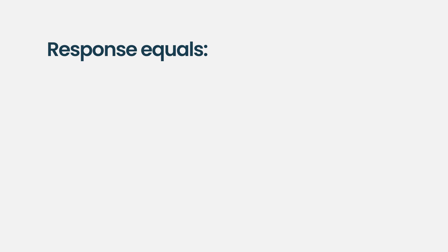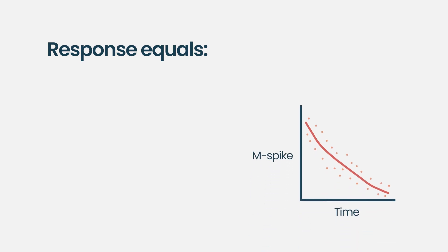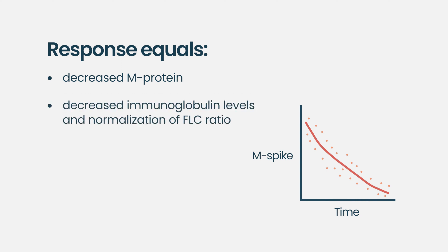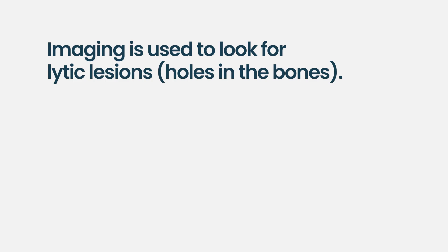Those are some of our quicker tests to tell if a patient is responding. What we're looking for is generally a decrease in those variables — a decrease in the M protein, a decrease in the involved serum free light chain level. We look at absolute levels and the ratio, seeking normalization of the free light chain ratio and a decrease in the involved free light chain level.